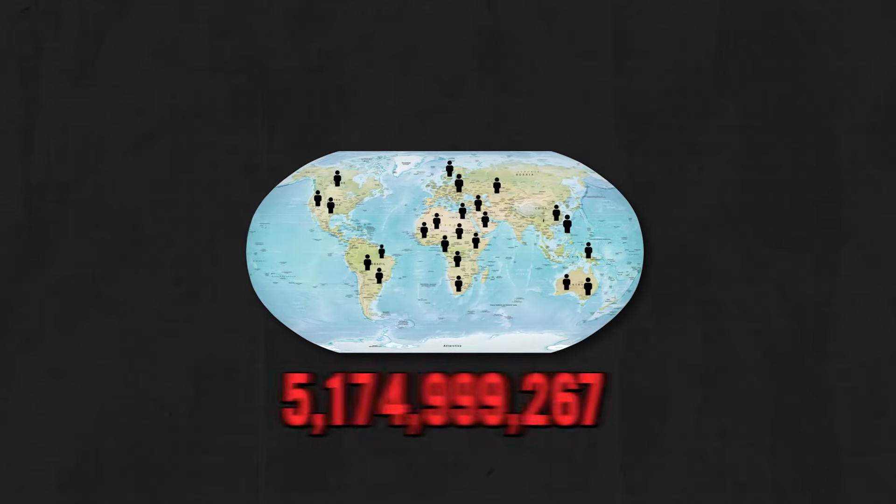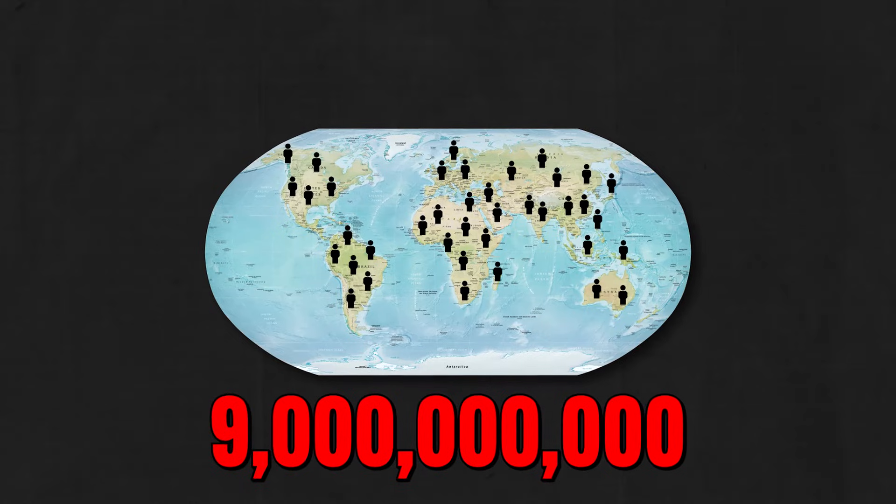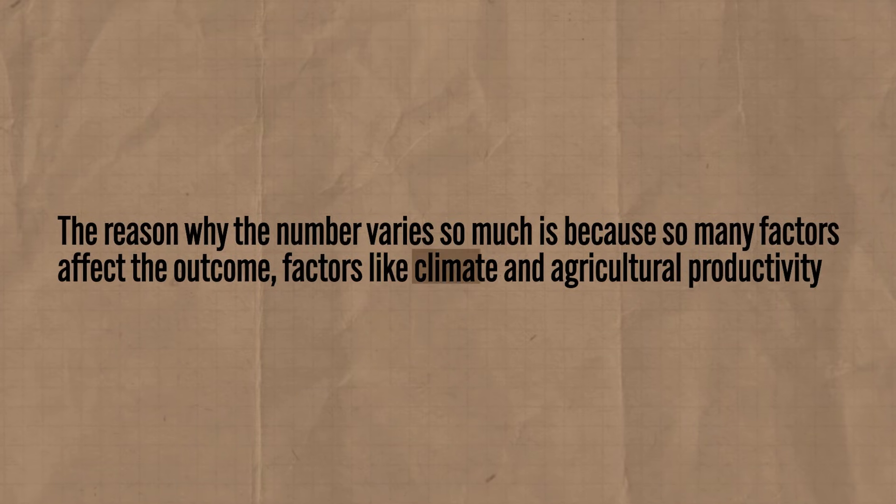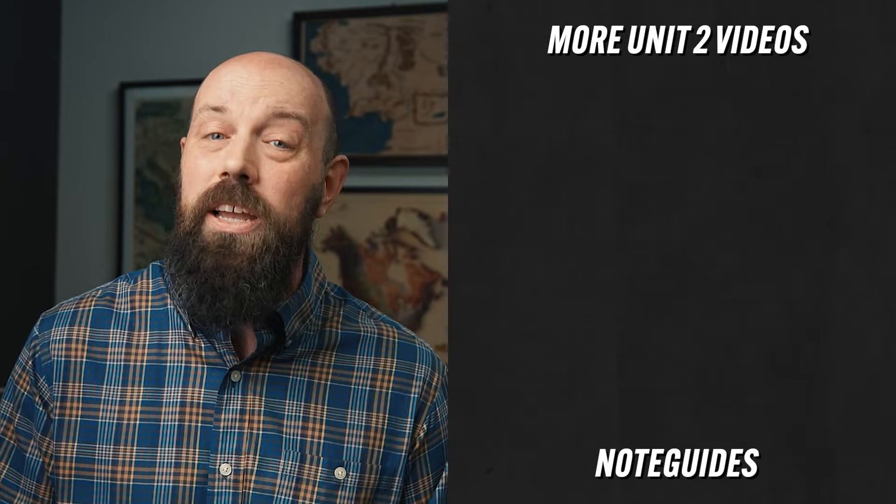That brings us to the concept of carrying capacity, which refers to the maximum population an environment can support. So back to our original question: how many people can the Earth actually support? There's not really a tidy answer. Some geographers say we're already past the Earth's carrying capacity, while others argue it's over a trillion. The reason this number varies so much is because so many factors affect the outcome, like climate and agricultural productivity. To further complicate things, not all populations use the same amount of natural resources — wealthy populations tend to use more than they need, leaving other populations with less. If everyone used only the resources they needed to survive, carrying capacity might be easier to determine.